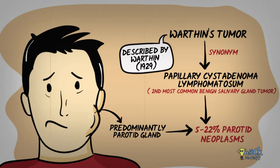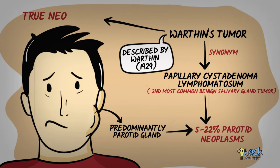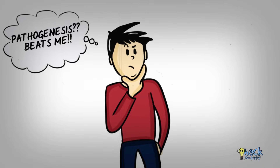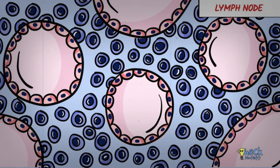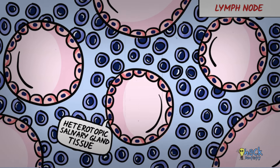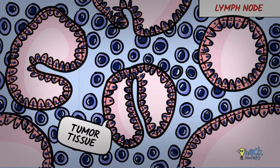Though Warthin's tumour is believed to be a benign tumour, there are studies which suggest that this lesion may not be a true neoplasm. Although the pathogenesis of this lesion is unknown, there are a few theories that have been put forth. The commonly accepted hypothesis suggests that heterotopic salivary gland tissue proliferates within the intraparotid or paraparotid lymph nodes to give rise to the lesion.